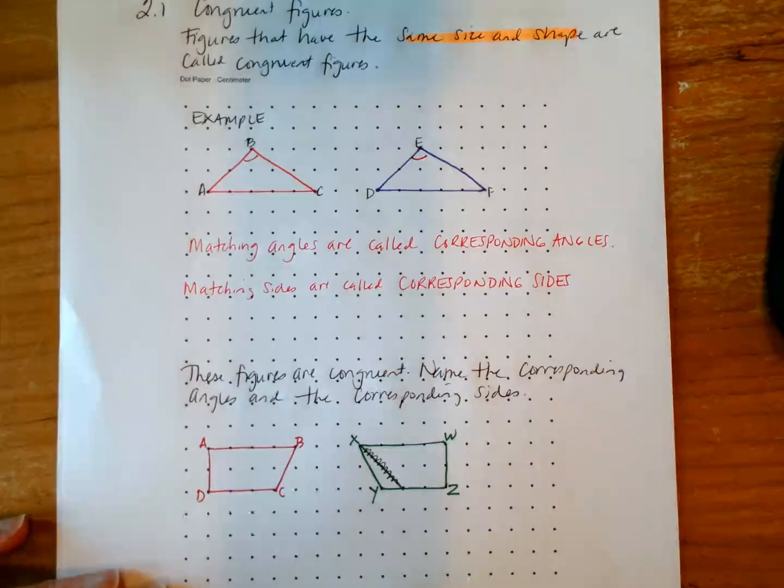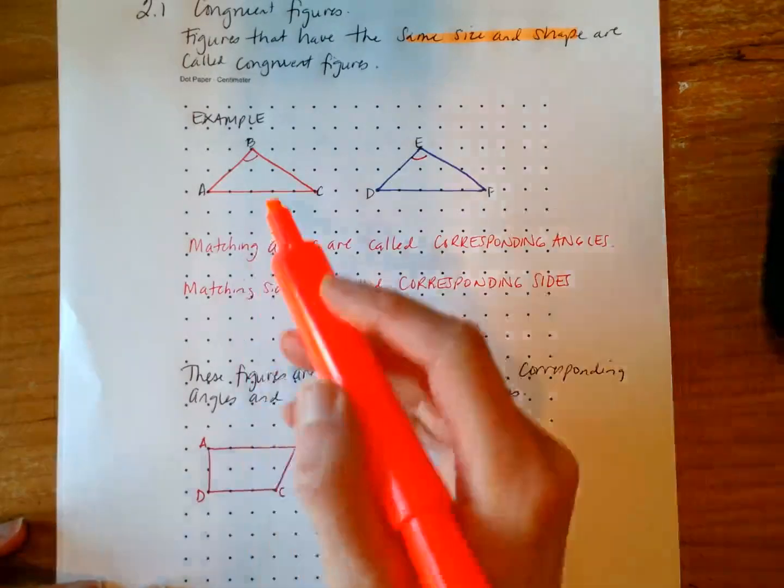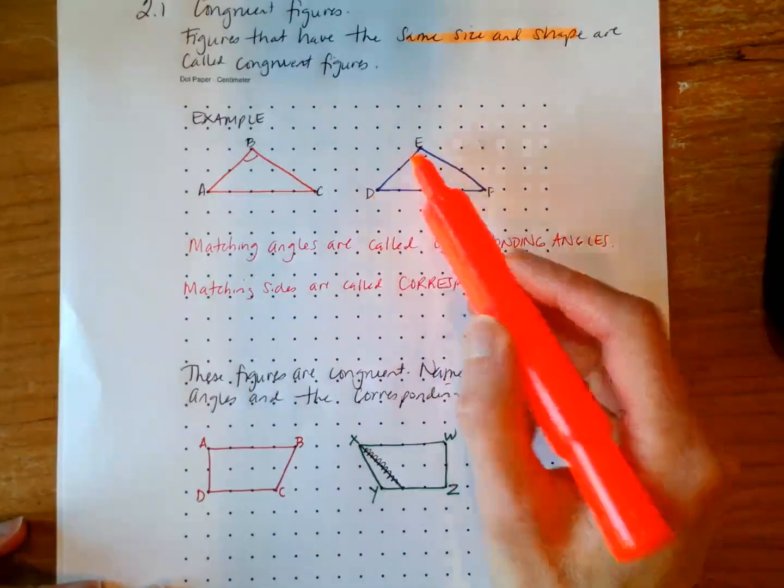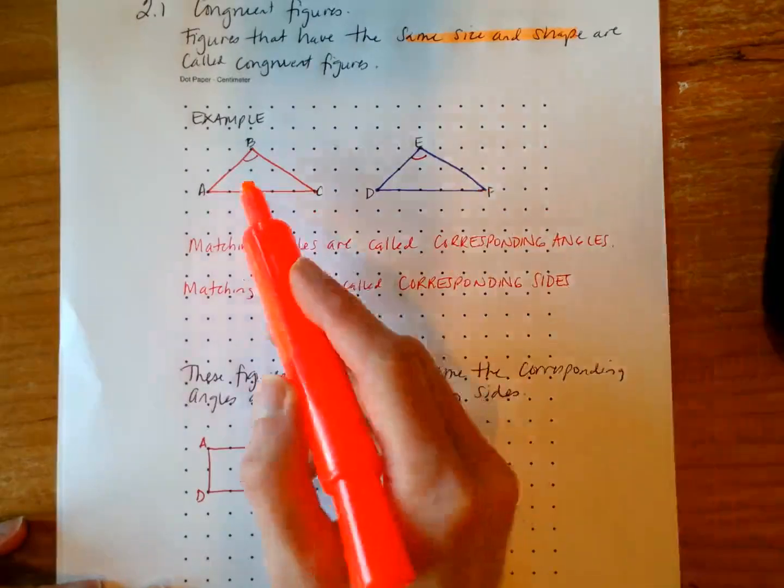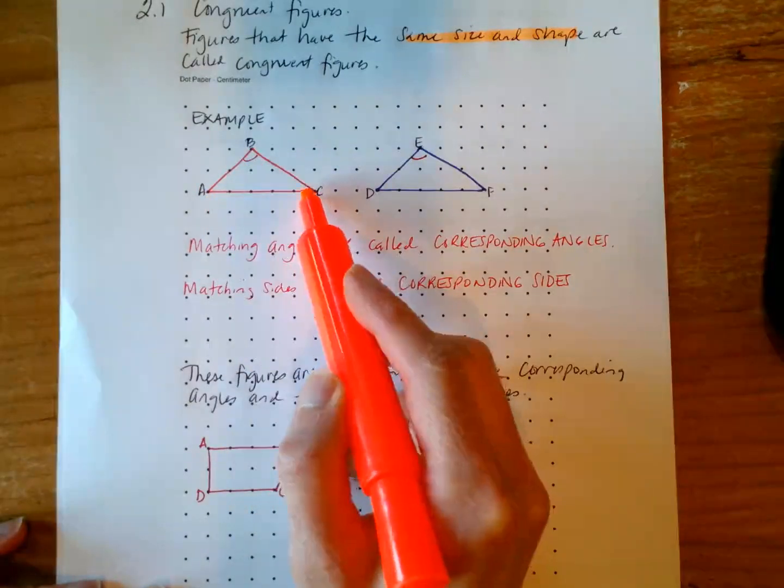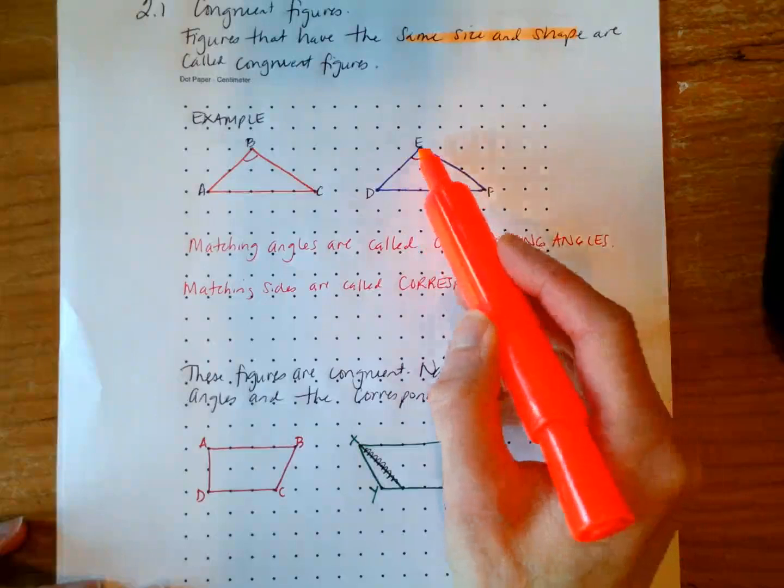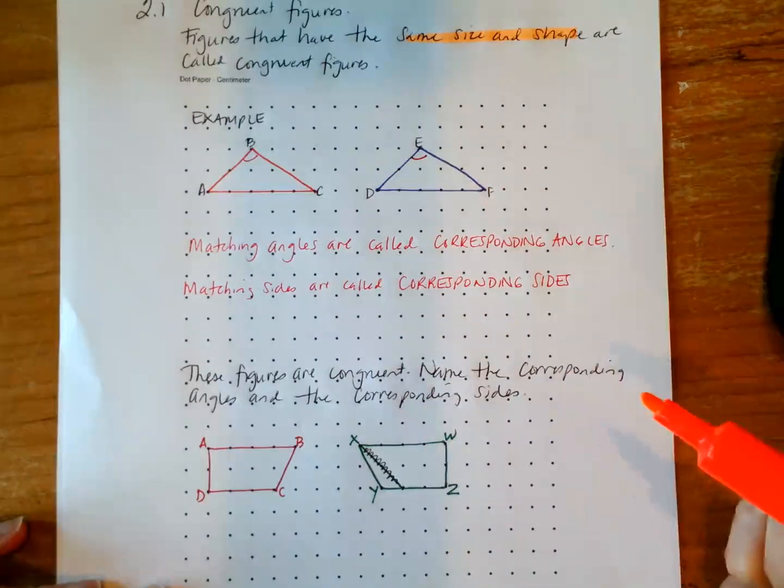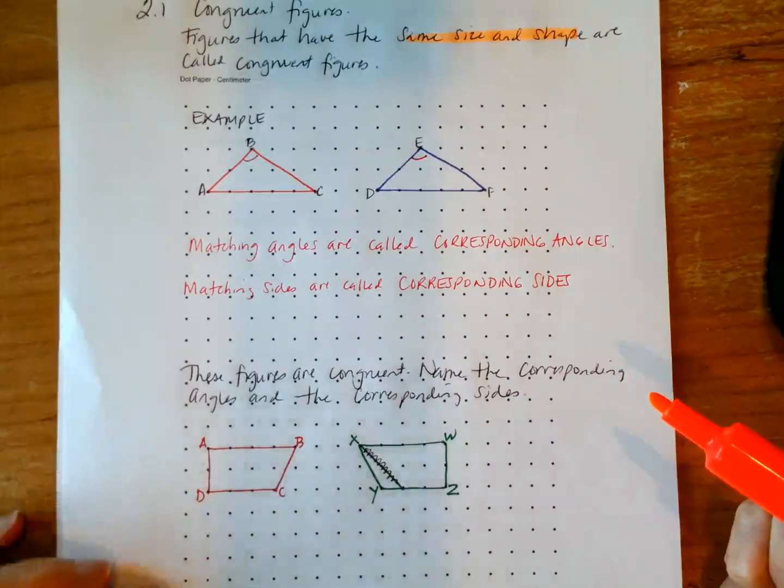So we've got two examples of congruent figures here. We have example ABC and example DEF. We can see that they are both the same size as each other, if you count the dots, and we've got the same shape as each other. So these are indeed congruent figures.